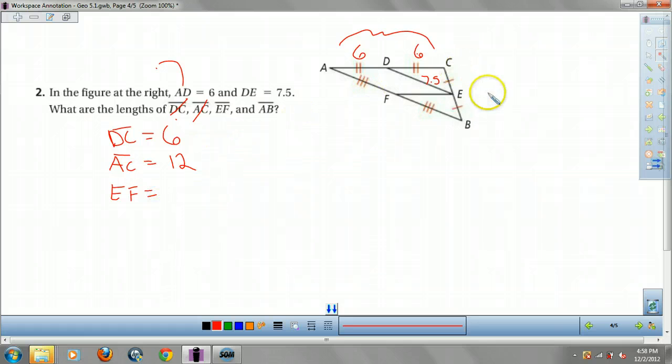EF. This side is 12. Remember, FE equals 1 half AC, right? So FE equals 1 half 12, which is 6.